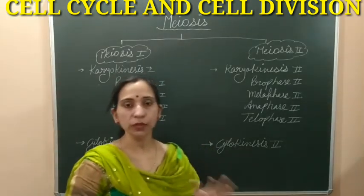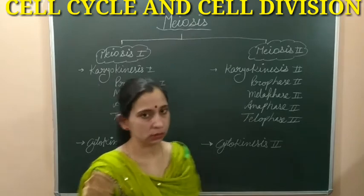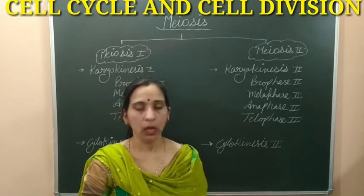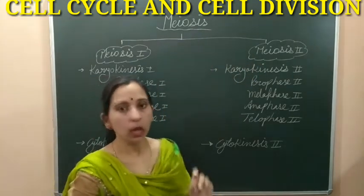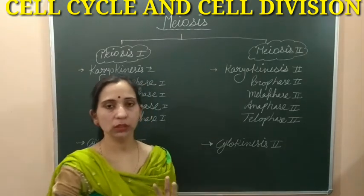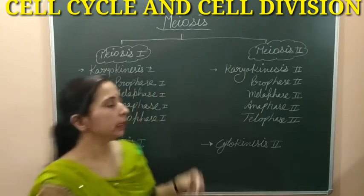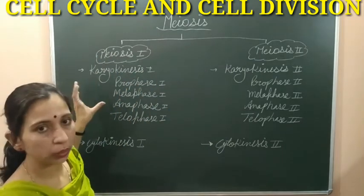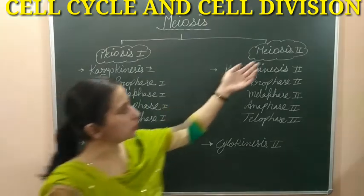Now let's discuss how meiosis happens — we will discuss all the steps in the form of a flowchart, and after that we will take the details of all these stages. This meiosis process completes in two stages: the first stage is known as meiosis 1 and the second stage is known as meiosis 2. Each stage has karyokinesis and cytokinesis, just like in mitosis. In meiosis 1, first karyokinesis happens, then cytokinesis. The same thing happens in meiosis 2 also — first karyokinesis, then cytokinesis. So cells are dividing two times.